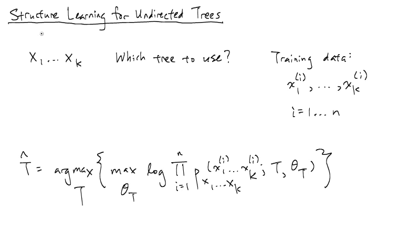Now I'm going to talk about structure learning with undirected tree-structured graphical models. We have random variables x1 through xk, which you can think of as nodes in an undirected graphical model. But we don't know which edges should be in this graphical model, and restricting ourselves to trees, the question is: which tree should we use?